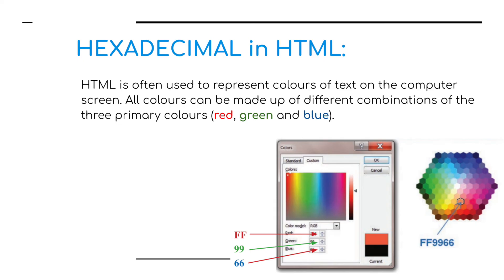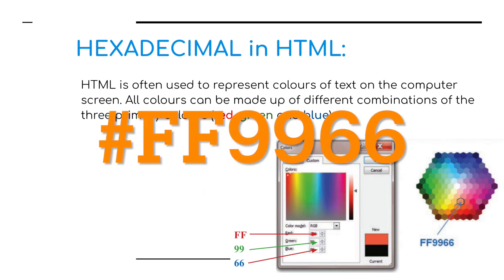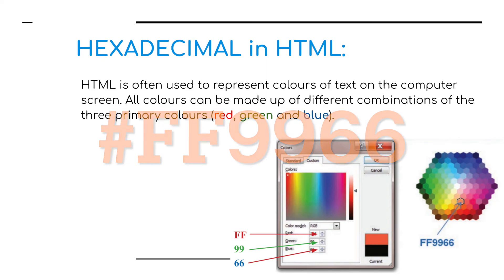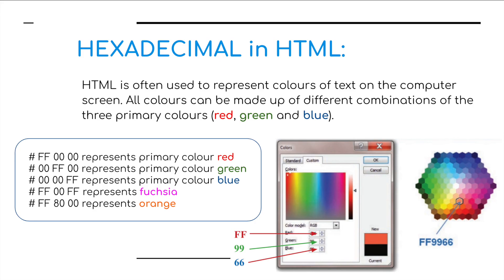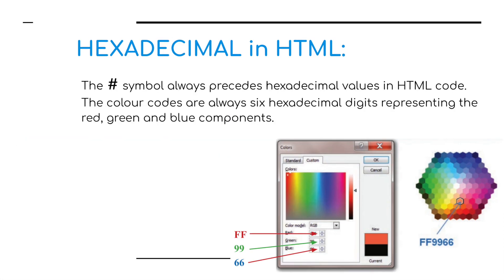For example, to make orange we've used FF for full red, 99 for a shade of green, and 66 for a shade of blue. Combining full red and full blue gives fuchsia. There are many more examples. Hexadecimal colour codes always start with a hashtag to show that it is a colour being represented.